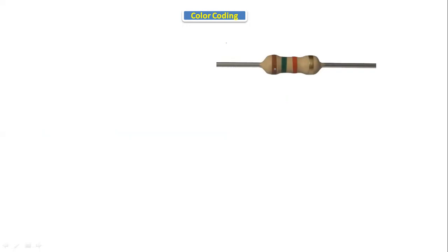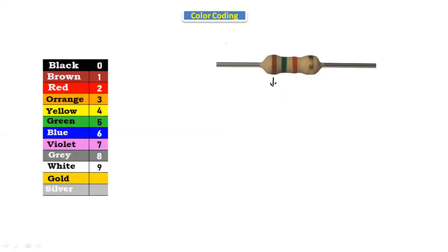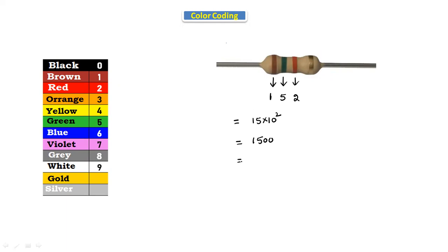Now let's calculate for a resistor having brown, green, and red color bands. Brown indicates 1, green indicates 5, and red is the multiplier 10^2. Applying the formula: 15 × 10^2 = 1500 ohms. Converting to kilo ohms, that is 1.5 kilo ohms.